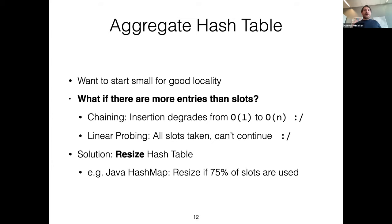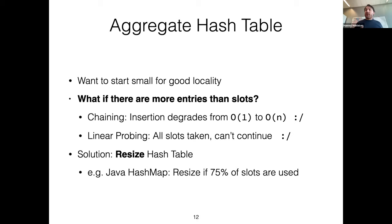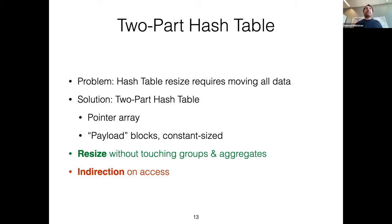One problem with hash tables is that we don't know a priori how many groups there will be, and we don't want to start with giant hash tables for locality reasons. If we run out of space, insertion performance degrades from O(1) to O(n) — for chaining everything ends up in the same chain, and linear probing grinds to a halt. The solution is to resize, but resizing means moving most of the data around, which gets particularly problematic with many groups and many payload columns.